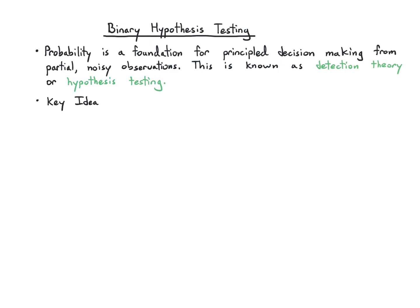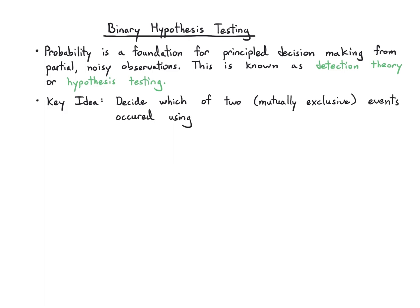The key idea is that we need to decide which of two mutually exclusive events has occurred using an observation. Let's do some examples.